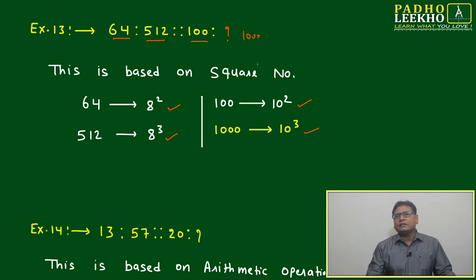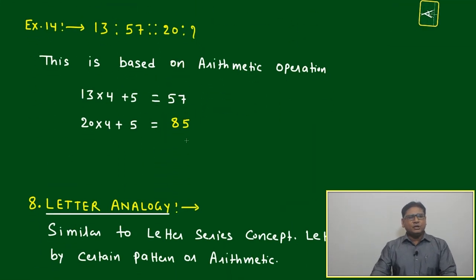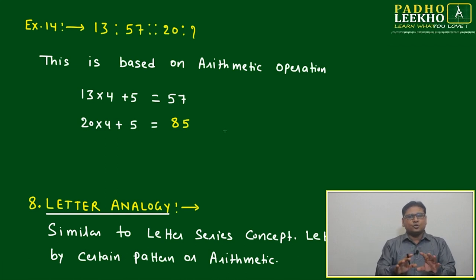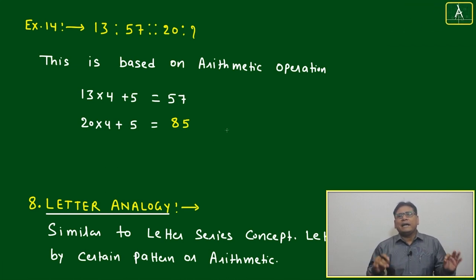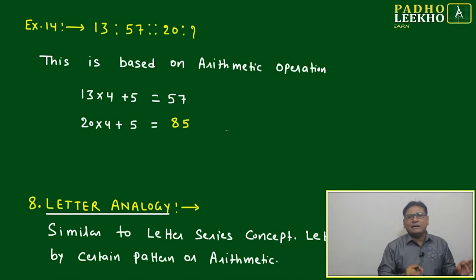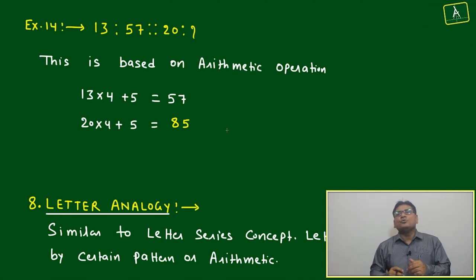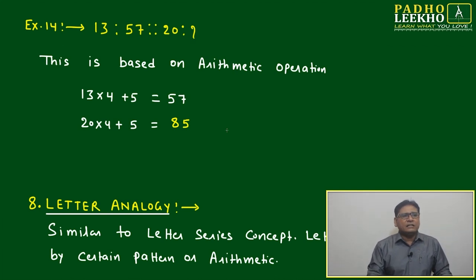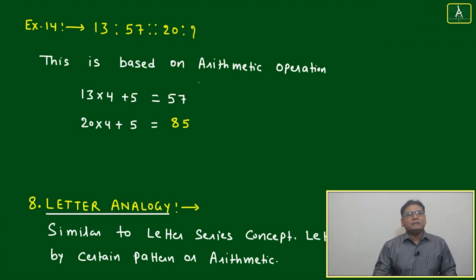This will come to Example 14, and that will look a little mind-boggling because there is no clue, no any particular relation which is established through famous arithmetic process. Like 13, 57, 20 - we don't know. Just we'll try to understand. It is just simple, I told, like any of the relation they can make.